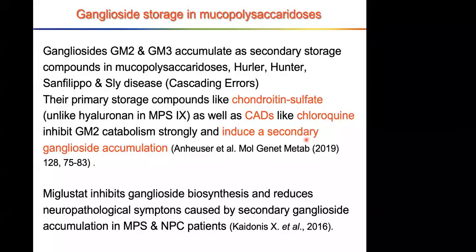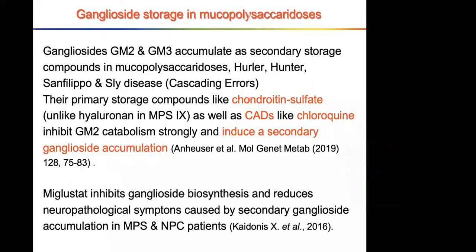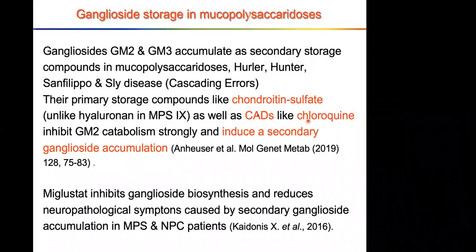Ganglioside storage is not only found in ganglioside storage diseases or secondarily in Niemann-Pick diseases — gangliosides GM2 and GM3 also accumulate as secondary storage compounds in mucopolysaccharidoses such as Hurler, Hunter, Sanfilippo, and Sly disease, generating cascading errors. The primary storage compound chondroitin-6-sulfate is a strong inhibitor for the degradation of GM2, as are cationic amphiphilic drugs like chloroquine — they inhibit GM2 catabolism and induce a secondary ganglioside accumulation.